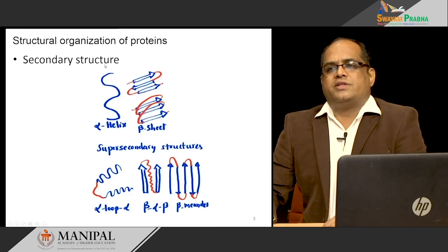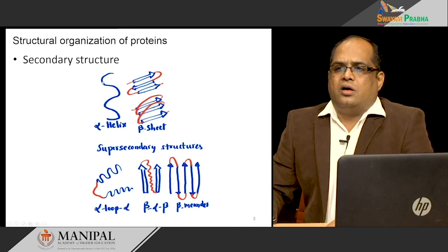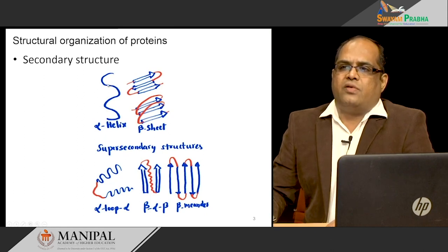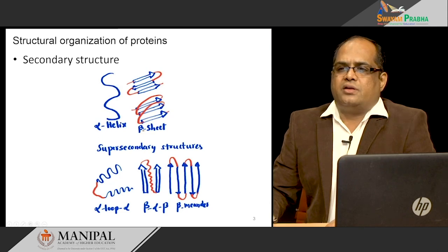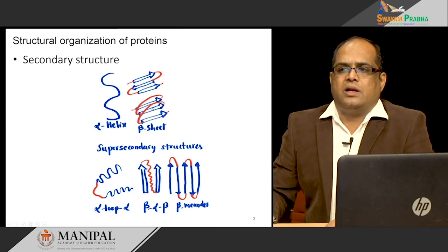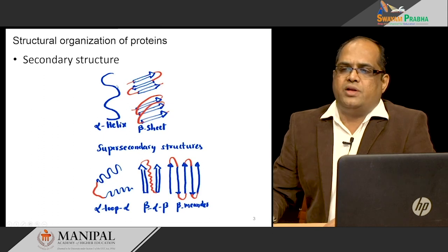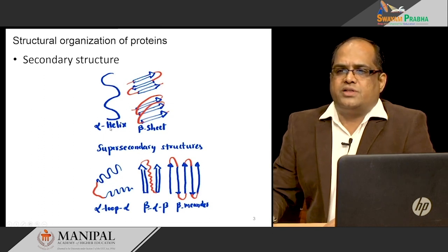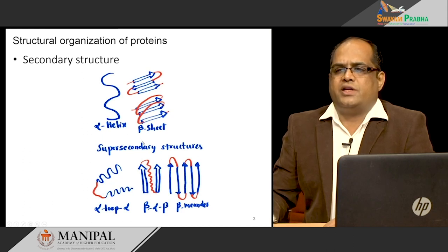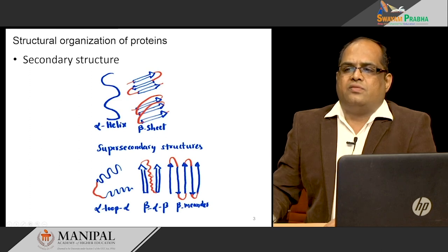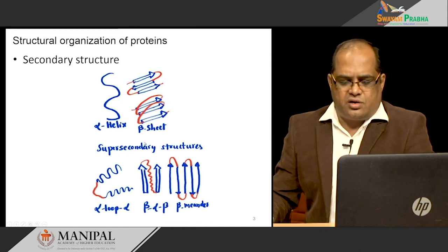We also have the secondary structure. The primary structure is wound or bent into an alpha helical form — we call it alpha helix — and it can also be seen as a beta sheet-like structure, which may be antiparallel or parallel beta sheets. These are due to hydrogen bonds between the amino acids, which cause these different secondary structures. We also have super secondary structures like alpha-loop-alpha structure, beta-alpha-beta structure, and beta meander.